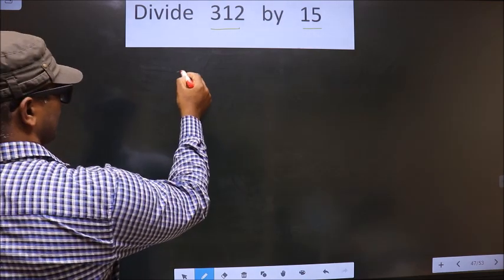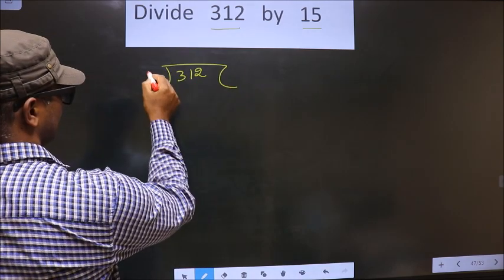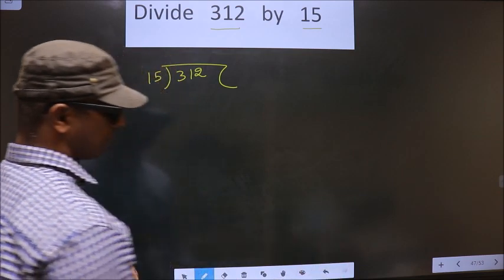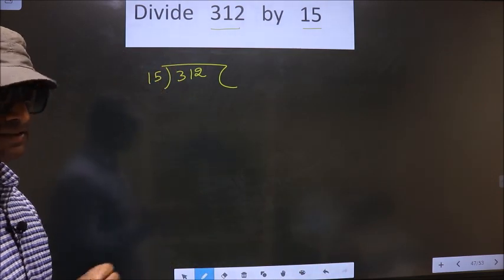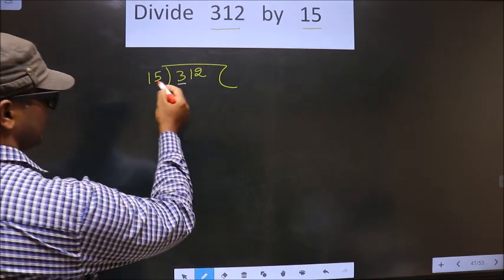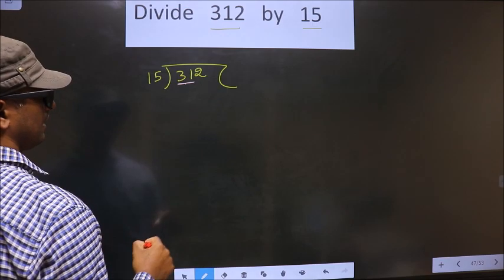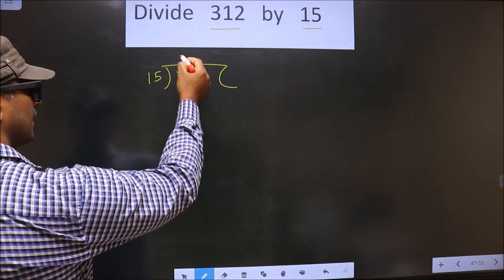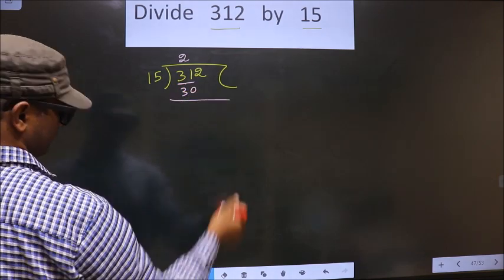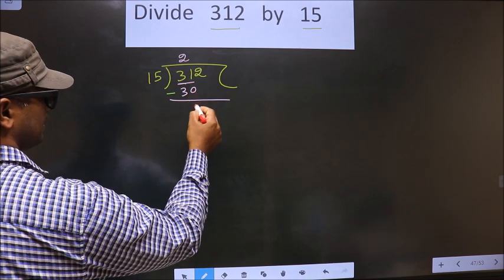That is 312 and 15 here. Okay. Next. Now here we have 3. 3 is smaller than 15, so we take two numbers, that is 31. A number close to 31 in 15 table is 15 to 30. So now we subtract. 31 minus 30 is 1.